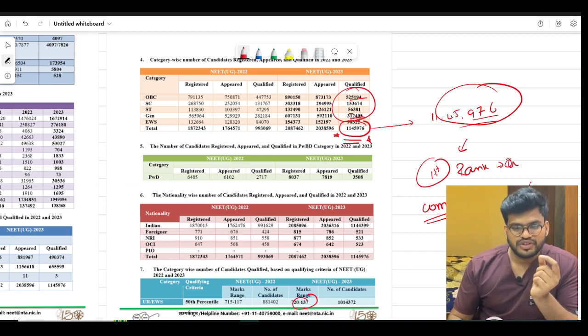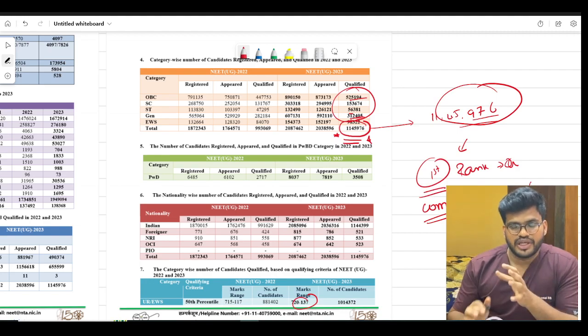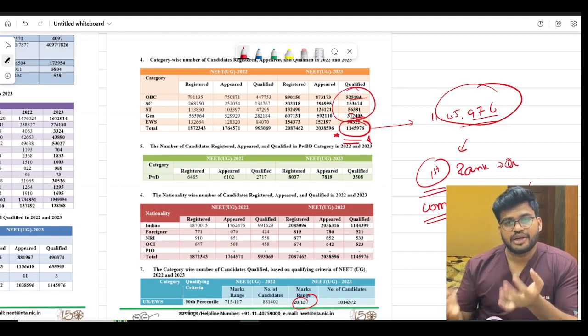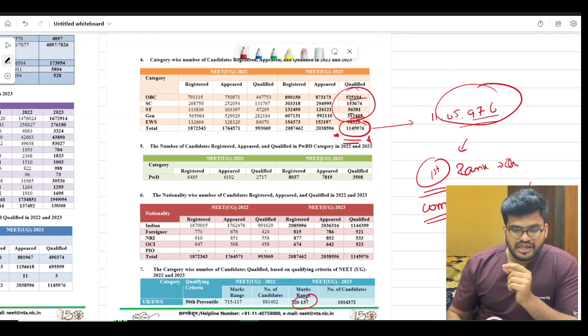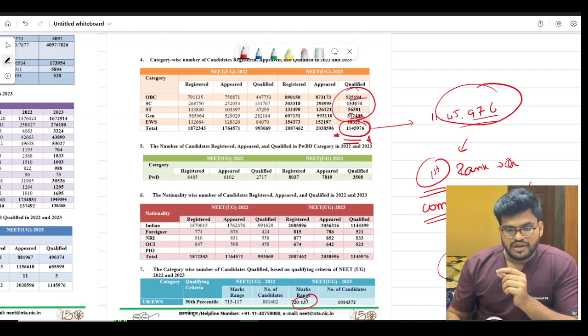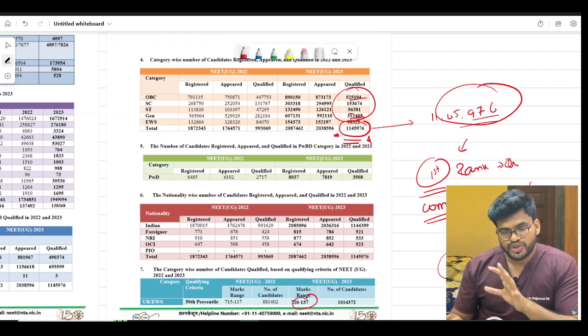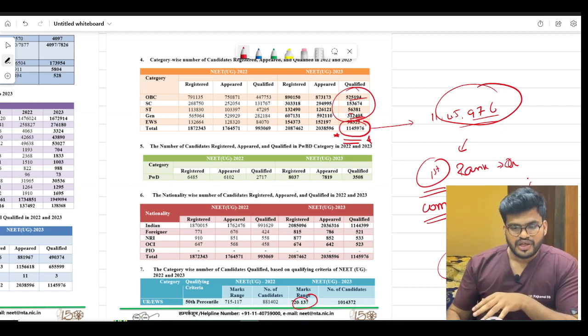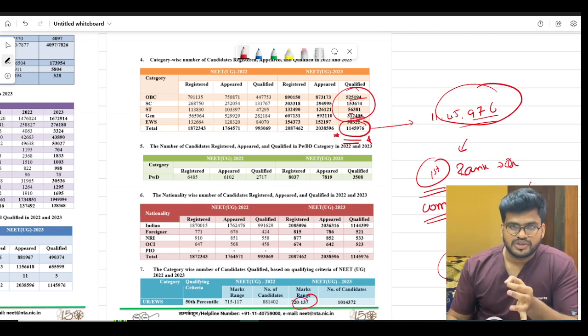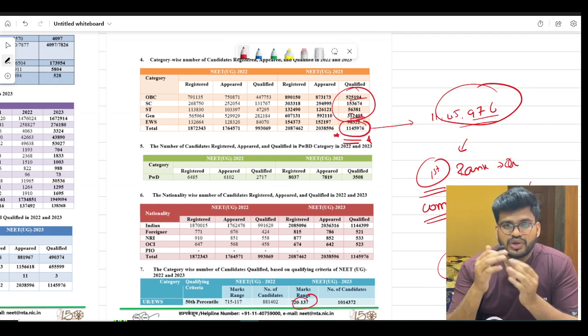To check the NEET result, first you need to see your overall rank, then community rank - keep that in mind. To get a government seat for sure this year, I am not talking about reserved categories, I am saying for general category here the score needs to be 600 plus. You need to score 600 plus.